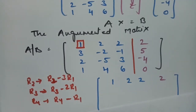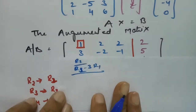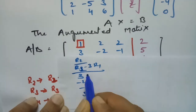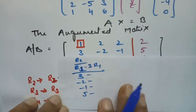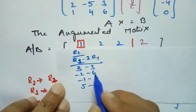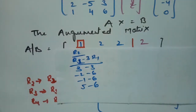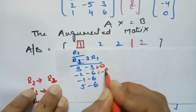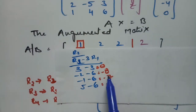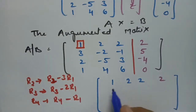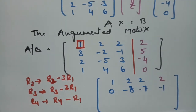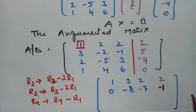For R2, the operation is rho 2 minus 3R1. Rho 2 is 3, minus 2, minus 1, 5. We subtract 3 times R1, which gives 3 times 1, 3 times 2 is 6, 3 times 2 is 6, and 3 times 2 is 6. The resulting values are: 0, minus 8, minus 7, and minus 1. So R2 becomes 0, minus 8, minus 7 | minus 1.